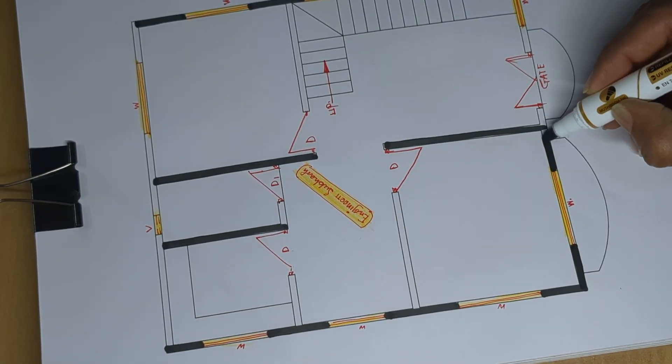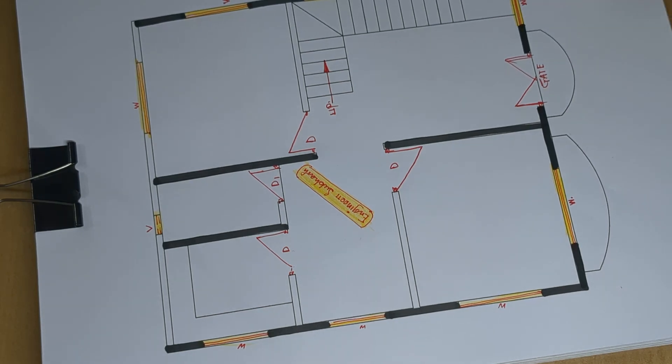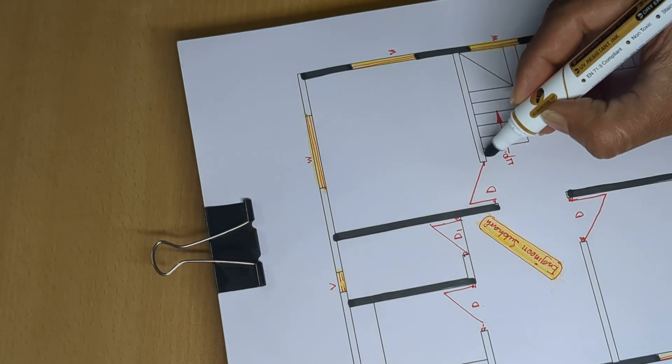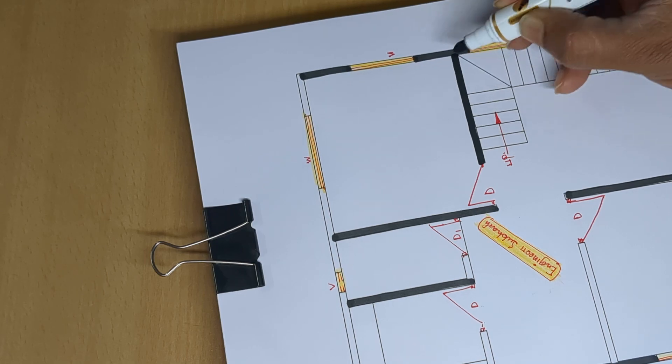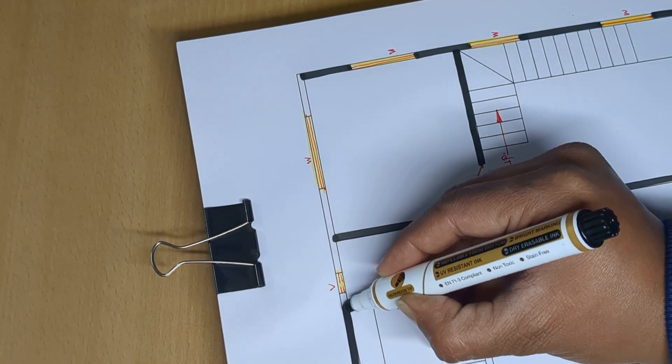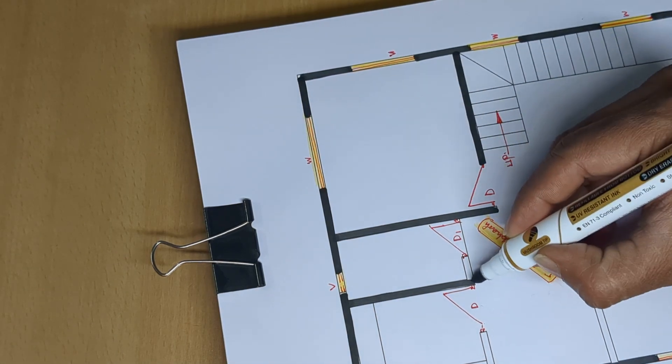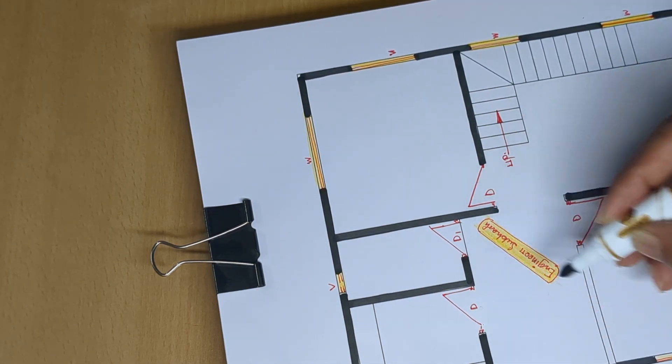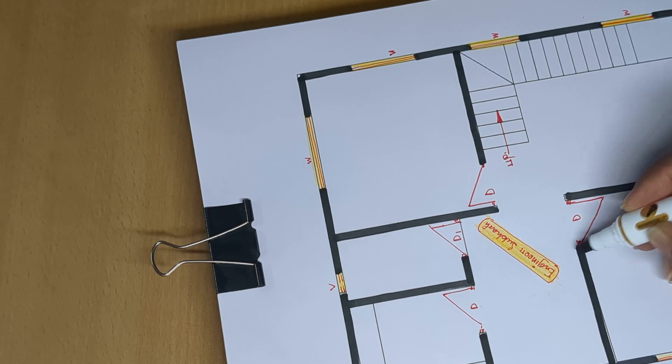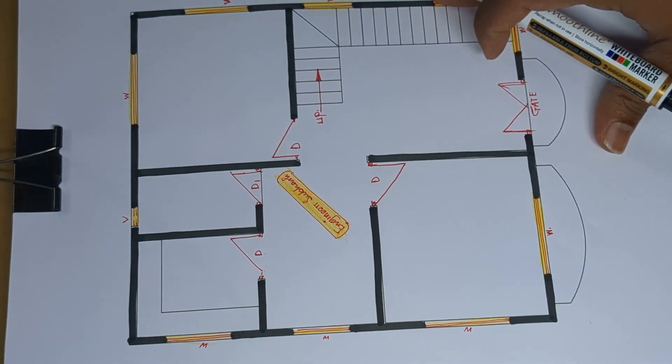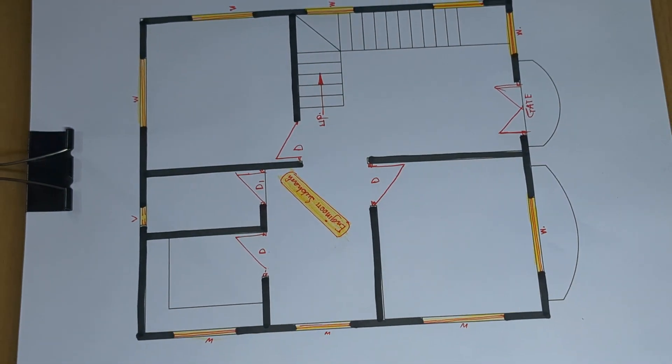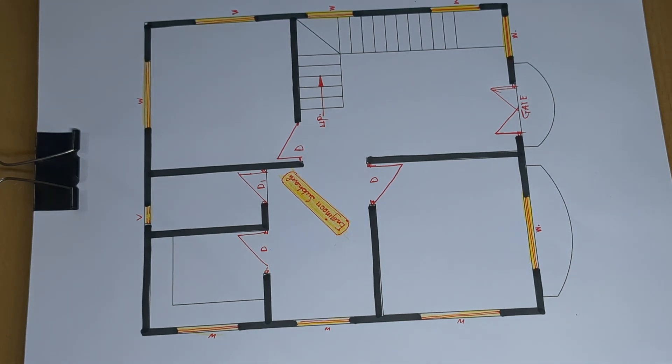One side wall, okay, next internal partition wall, outer and internal partition wall, 125 mm. Total two bedroom, okay, measurement.